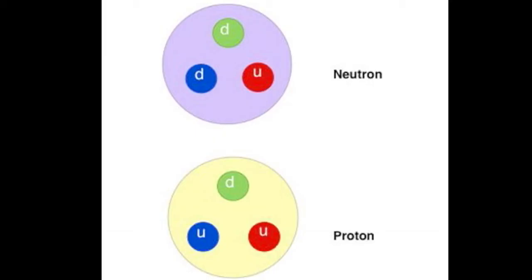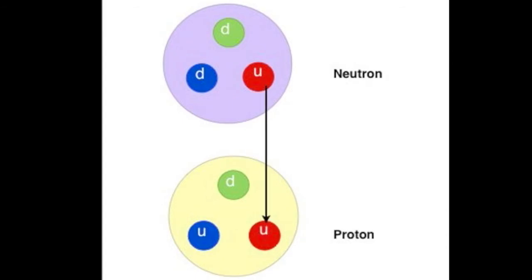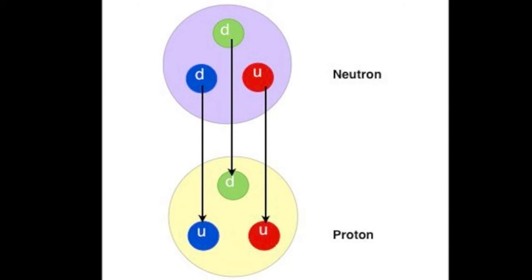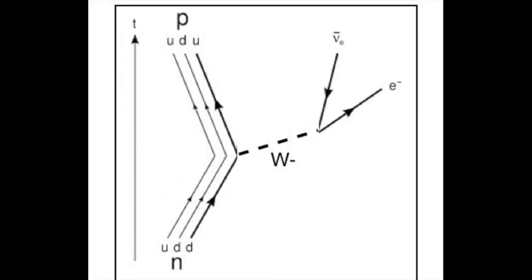Analyzing this more closely, it is one of the quarks within the neutron that has changed. The up and one of the down quarks remain the same, but one of the down quarks is transformed into an up quark. This change can be illustrated in a Feynman diagram. If you are not familiar with those, there is another video with supporting notes to help the explanation.